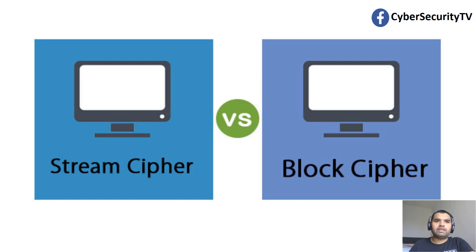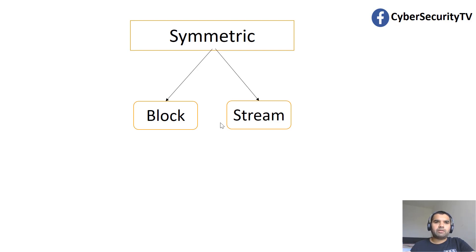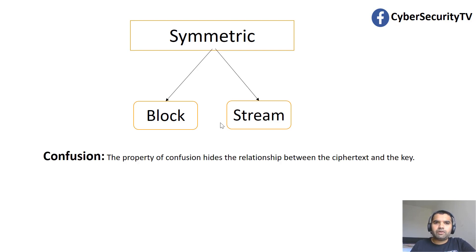Previously we talked about symmetric and asymmetric encryption. This time we're going to talk about block and stream ciphers. Block and stream cipher are part of the symmetric encryption family. Block cipher refers to a block of plaintext — we have a set amount of data, like 64 bits, and we take chunks of 64-bit blocks, encrypt them, and send them over. In the stream cipher it's the opposite — we encrypt bit by bit. We'll see that in detail shortly.